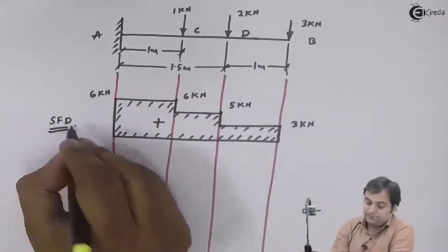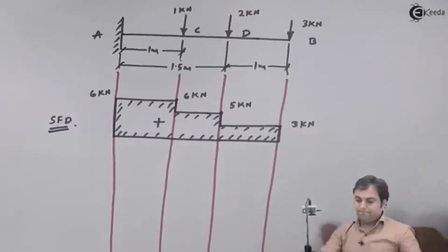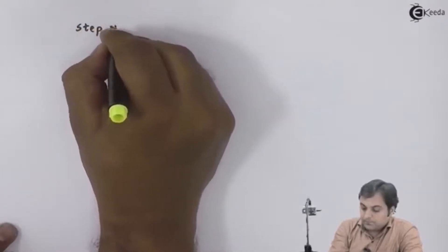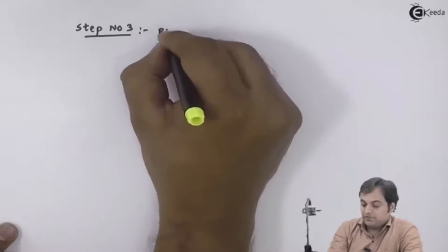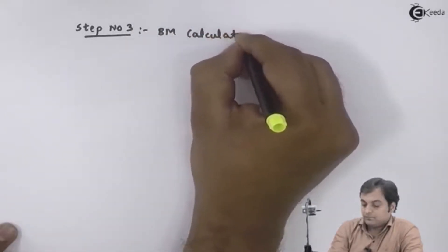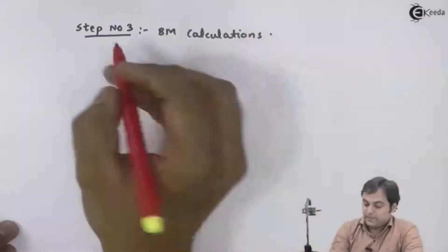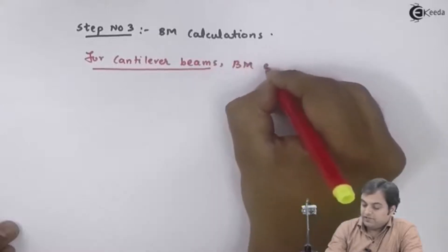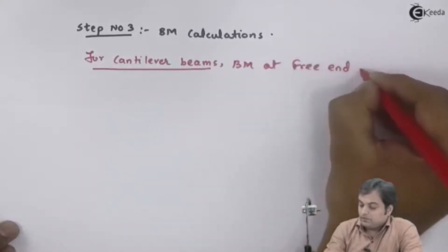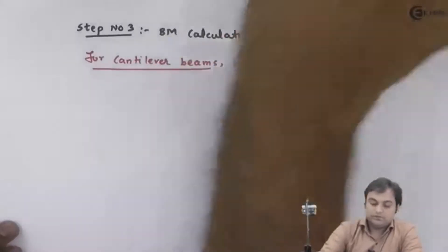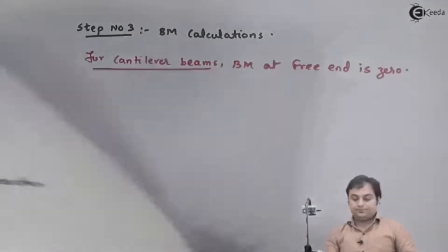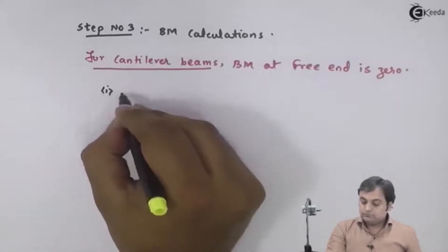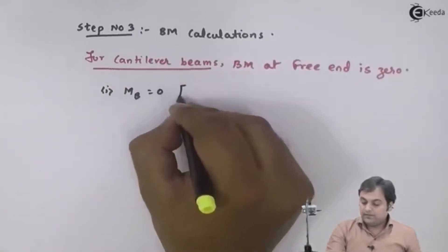Here we have the shear force diagram. Now below this we will draw the bending moment diagram — step number 3, BM calculations. Remember: for cantilever beams, bending moment at the free end is 0. So at point B, since it is the free end, bending moment equals 0.